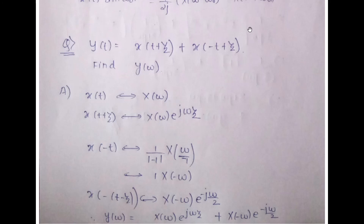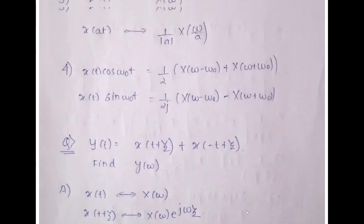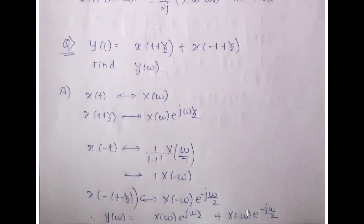For the second term: x(t) ↔ X(ω), and x(−t) uses x(at) with a = −1, giving (1/|−1|) X(ω/(−1)) = X(−ω). Replacing t with t − 1/2 gives x(−t + 1/2) ↔ X(−ω) e^(−jω·(1/2)). The final answer is Y(ω) = X(ω) e^(jω/2) + X(−ω) e^(−jω/2), which is just the application of the properties to this numerical.